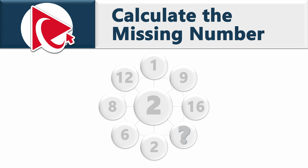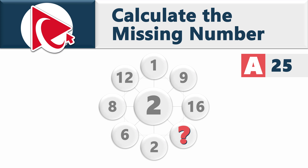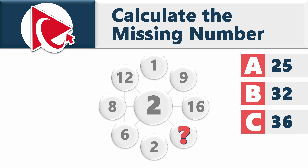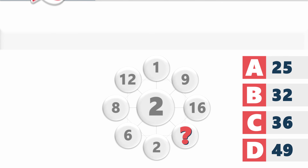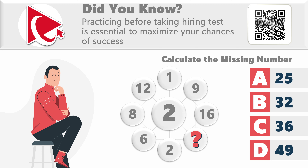You're presented with a cool-looking shape. It has eight numbers and the ninth number is missing. Starting with the middle, the first number is two, then another two, then six, eight, twelve, one, nine, sixteen — and then comes the missing number. You need to calculate and select from four choices: A) 25, B) 32, C) 36, and D) 49.